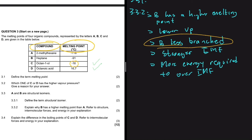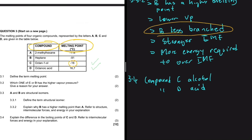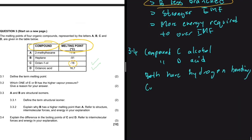Now let's do 3.4, which asks us to explain the difference in boiling points of C and D, referring to intermolecular forces and energy. Going back to basics: compound C is an alcohol and compound D is an acid. Because C is an alcohol and D is an acid, we know that both compounds possess hydrogen bonding.